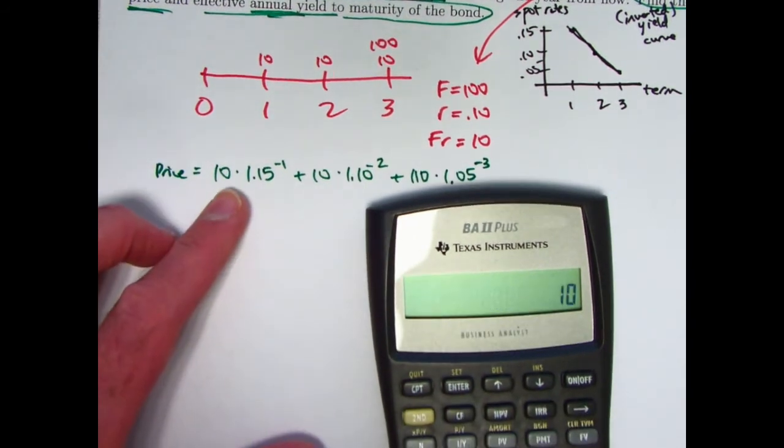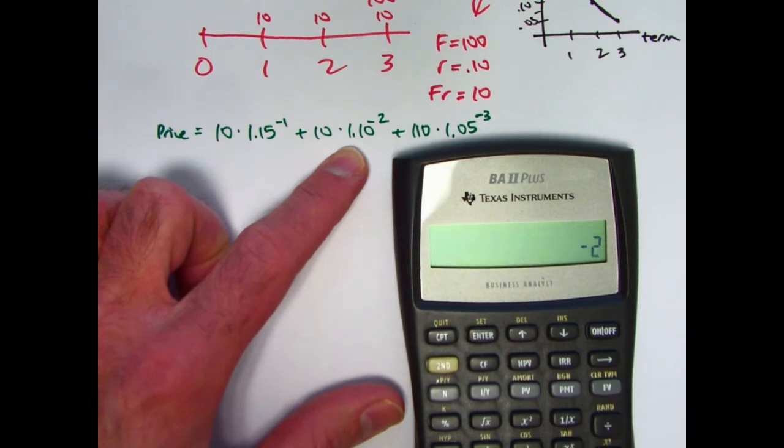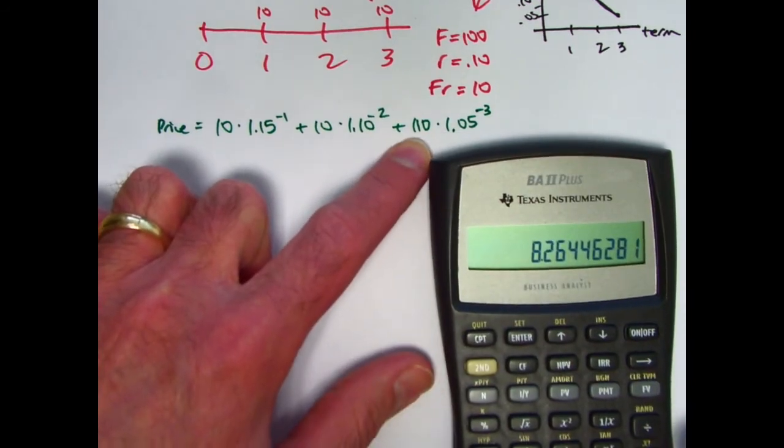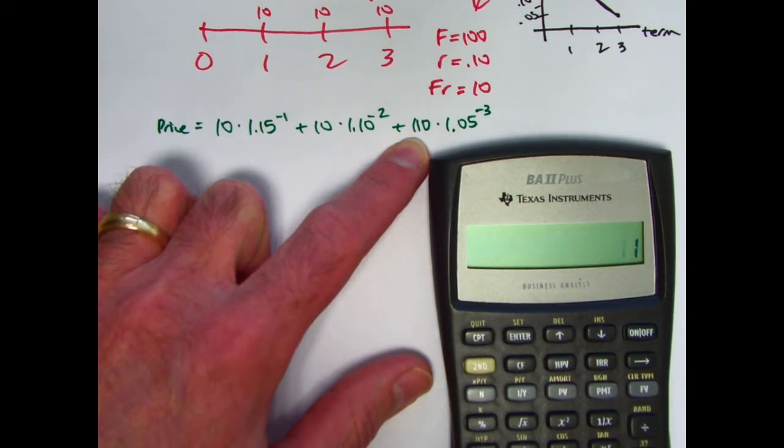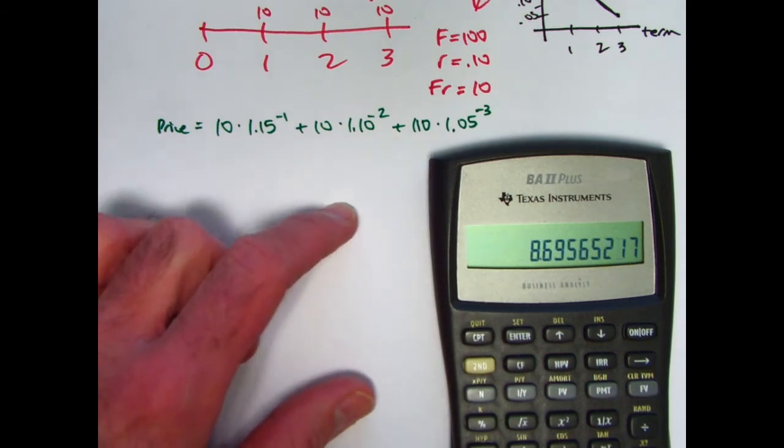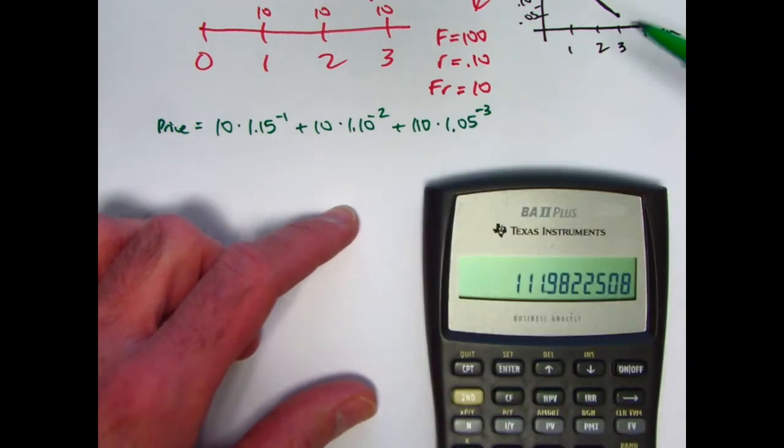The first one, I'll just do 10 divided by 1.15. Store that in register one. Here we've got 1.1 to the negative two times 10. Store that in register two. Finally, we've got 110 times 1.05 to the negative three. That turns out to be about 95.02. Now add what's in register one and what's in register two. Looks like the price is about 111.98.